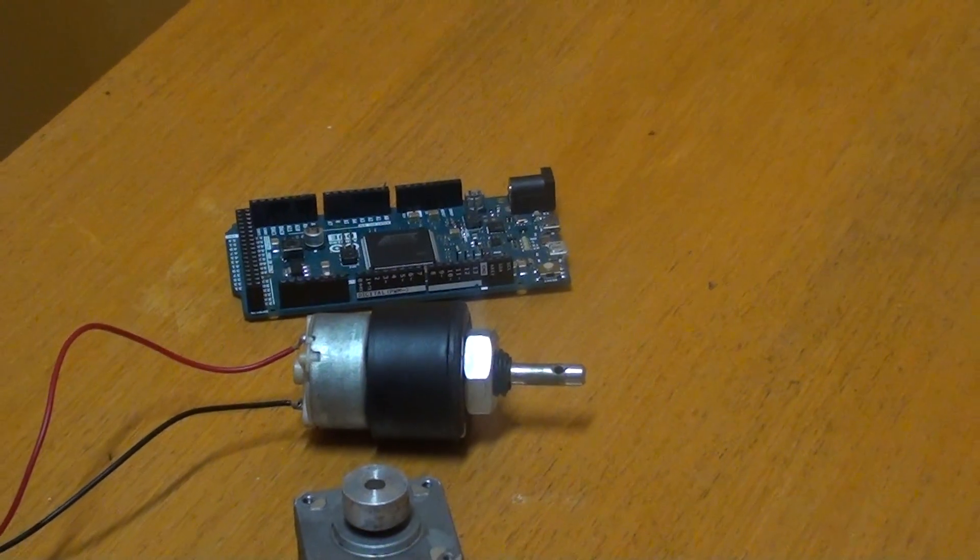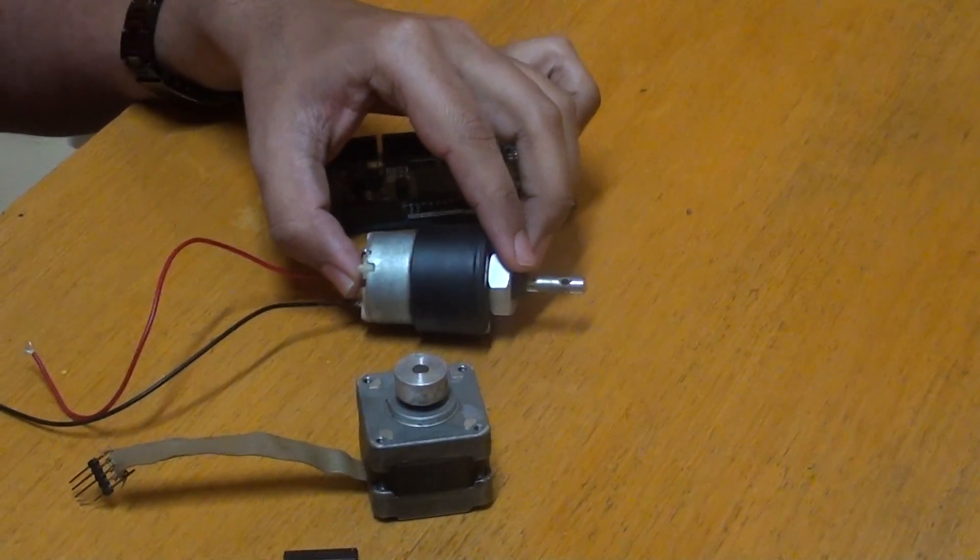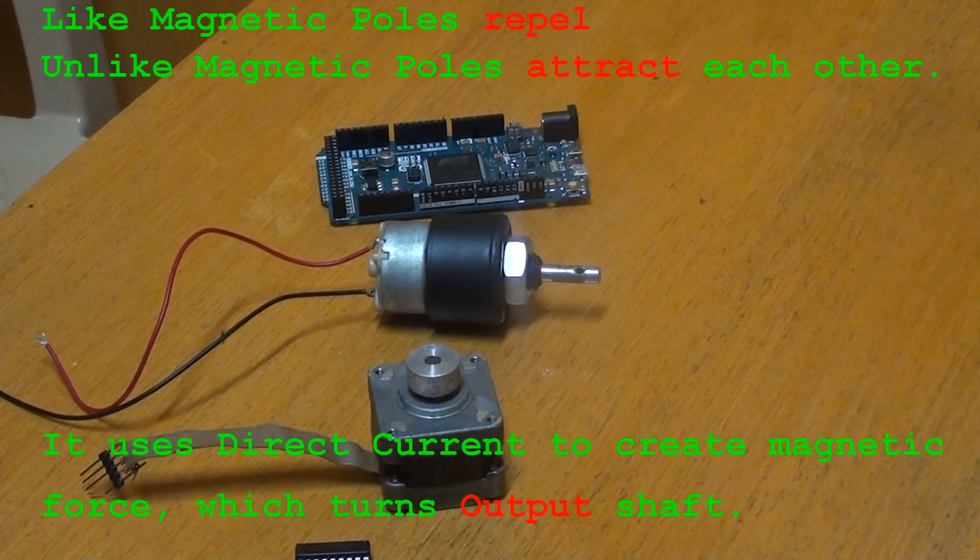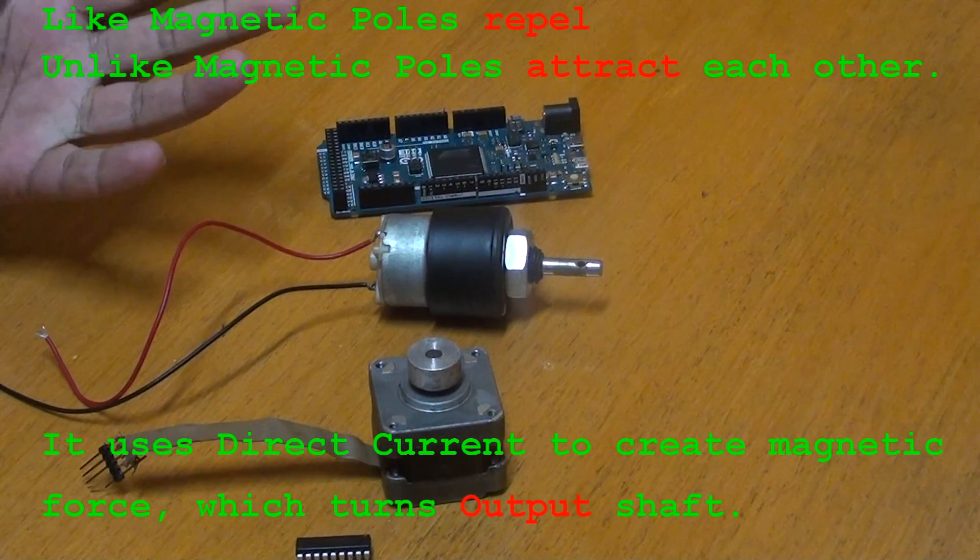Now we see that there is a DC motor here. A DC motor relies on the fact that like magnetic poles repel and unlike magnetic poles attract each other. That is how a DC motor works.